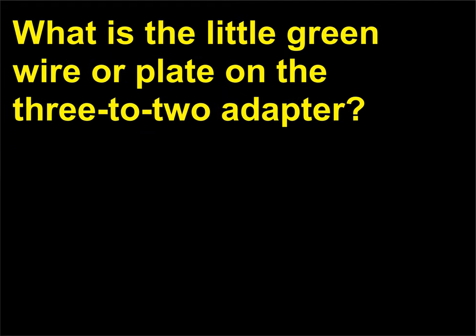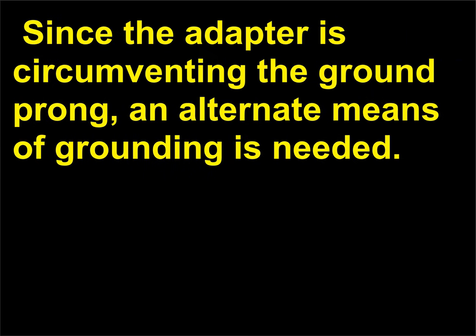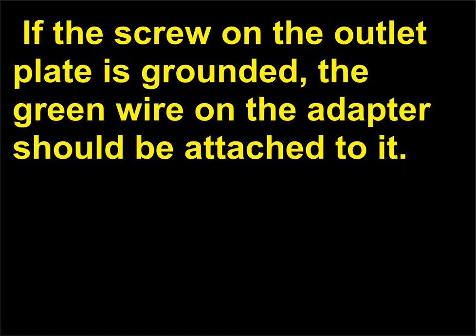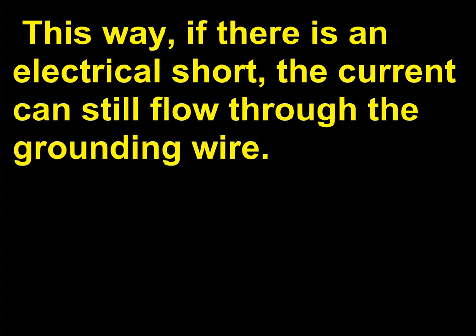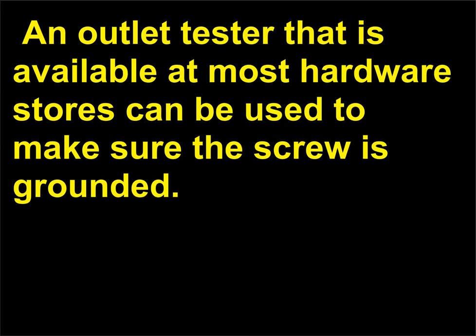What is the little green wire or plate on the 3-to-2 adapter? The green wire or metal tab attached to adapters is the grounding wire. Since the adapter is circumventing the ground prong, an alternate means of grounding is needed. If the screw on the outlet plate is grounded, the green wire on the adapter should be attached to it. This way, if there is an electrical short, the current can still flow through the grounding wire. If the screw is not grounded, then the adapter should not be used. An outlet tester available at most hardware stores can be used to make sure the screw is grounded.